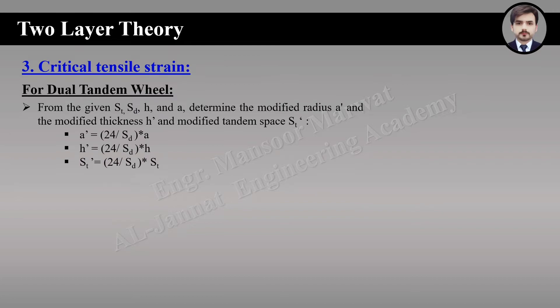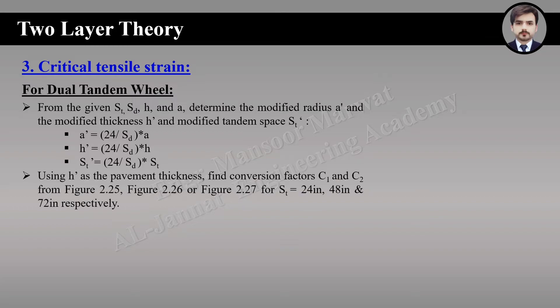For critical tensile strain for dual tandem wheel, first we find the modified radius, modified thickness, and modified tandem spacing. Then we find conversion factors C1 and C2. For dual tandem wheel we have three figures depending on the modified tandem spacing.